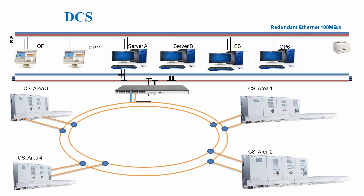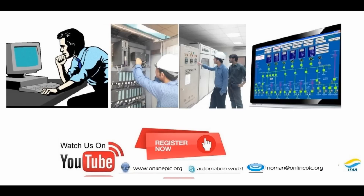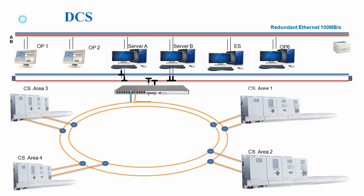Large oil and gas refineries have several thousand I/Os. Examples of where DCS is used include chemical plants, petrochemical plants, cement plants, boiler controls in power plants, nuclear plants, sugar refining plants, and fertilizer plants.